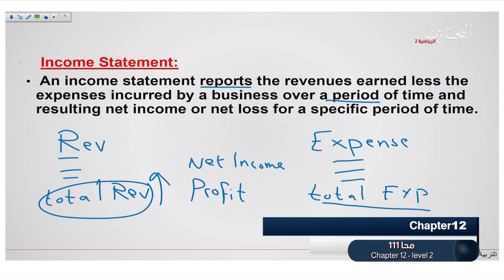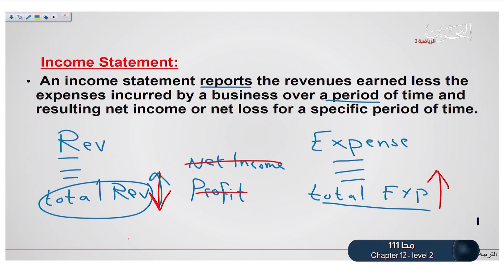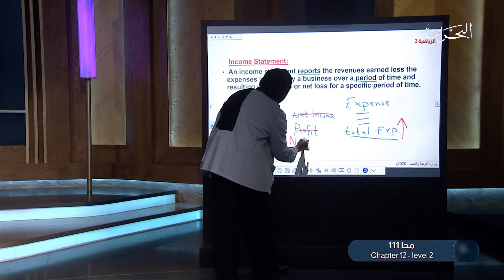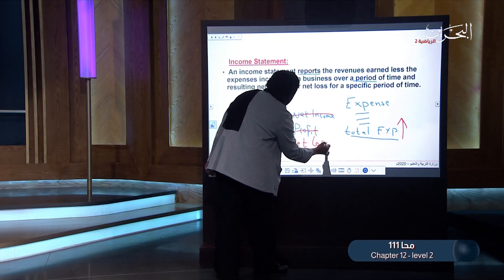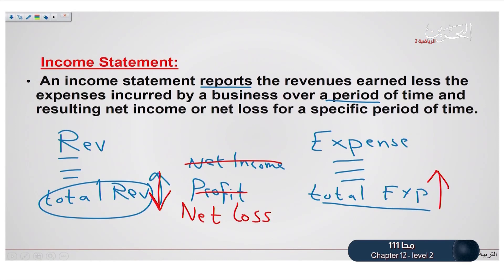In the other case, if the total expenses are higher and the total revenue is lower, then the company is losing money, so we are making net loss, which means we are losing our money.